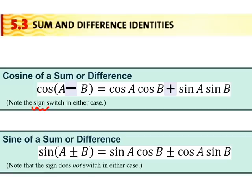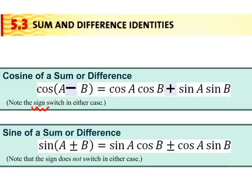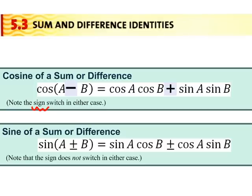for the sine sum and difference formula here on the bottom, notice that the sine S-I-G-N sign does not switch. If you have a plus on the left side, you have a plus on the right side. And notice that sine is grouped with cosine instead of cosine cosine up here and sine sine. On the bottom one, sine cosine cosine sine.